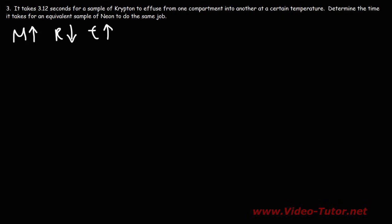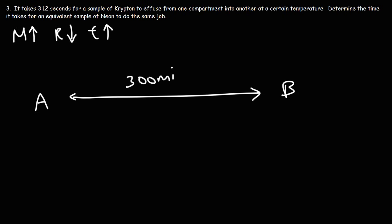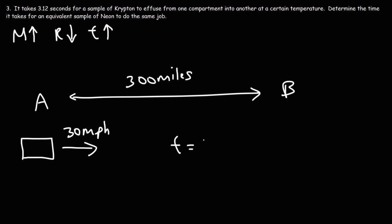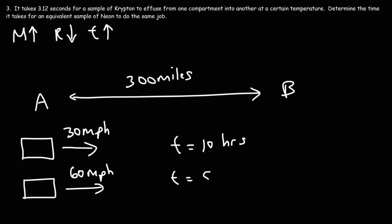To understand this, imagine driving to a destination 300 miles away. If you're going 30 miles per hour, it takes 10 hours to get there. If you're moving faster at 60 miles per hour, it only takes 5 hours. Think of speed as the rate — as the rate decreases, the time increases. If you're driving slower, it takes longer to reach your destination. That's the inverse relationship between rate and time.